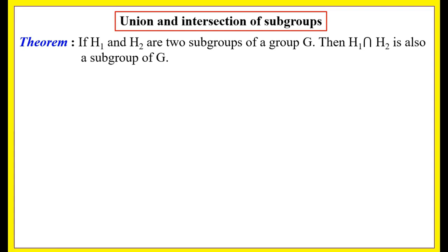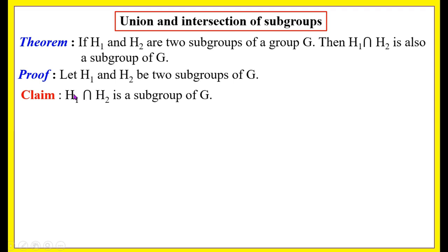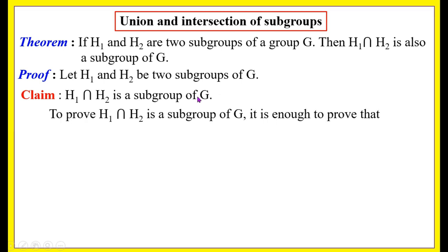Union and intersection of subgroups. If H1 and H2 are two subgroups of a group G, then the intersection H1 ∩ H2 is also a subgroup of G. Proof: Let H1 and H2 be two subgroups of G. We have to show that their intersection H1 ∩ H2 is also a subgroup of G.